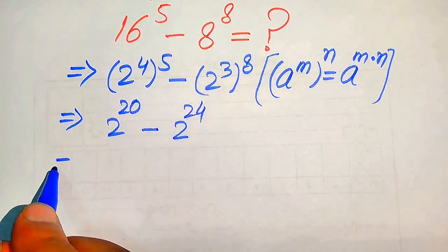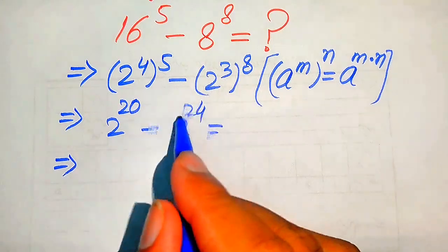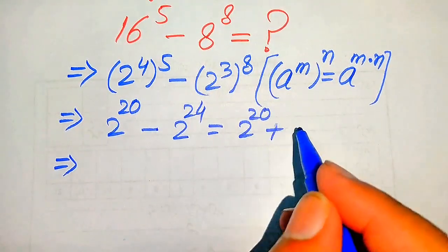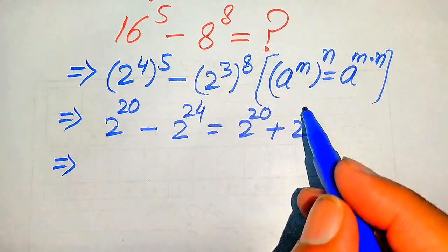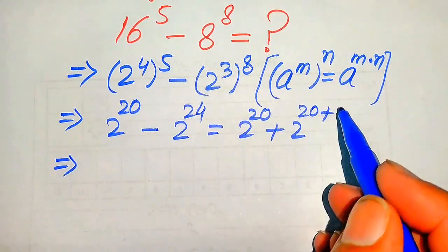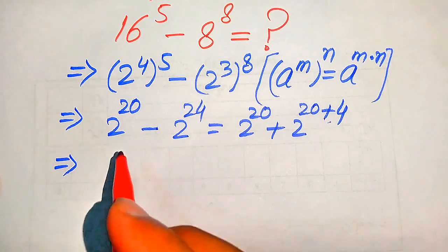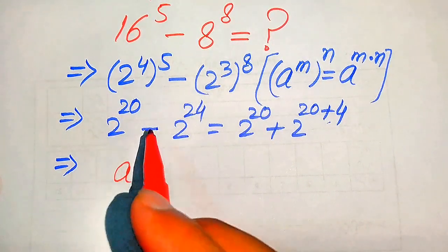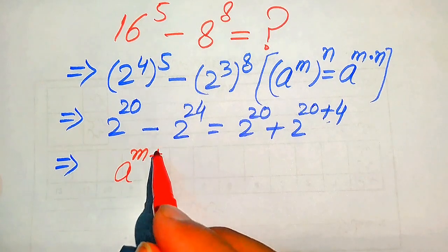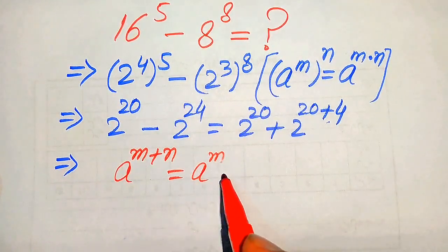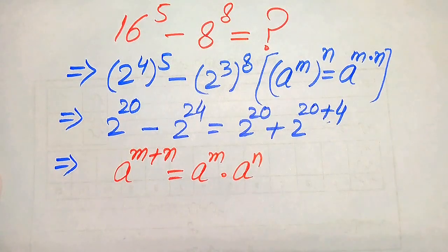Further in the next step we break this exponent: it is written as 2 to the power of 20 minus 2 to the power of 24, writing 24 as 20 plus 4. Now we use the exponent law: a to the power of m plus n equals a to the power of m multiplied by a to the power of n.